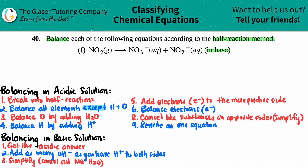I wrote down here all of the rules that we need to balance something in a basic solution — in basic conditions. But look at the first one: get the acidic answer first. Yeah, we have to get the acidic answer first. It always goes off of the acidic solution answer, and then you just add these little tweaks. But the big thing we have to memorize is knowing how to do that acidic condition balancing. That's why I wrote down all of these, because we have to do these regardless. So let's get the acidic solution answer first, and then all we have to do is just make a couple of tweaks, and we're done.